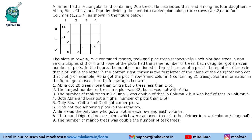He distributed that land among his four daughters Abha, Beena, Chitra and Deepti by dividing the land into 12 plots along 3 rows X, Y, Z and 4 columns 1, 2, 3, 4 as shown in the figure. He has to create 12 plots and each plot will contain a certain number of trees.